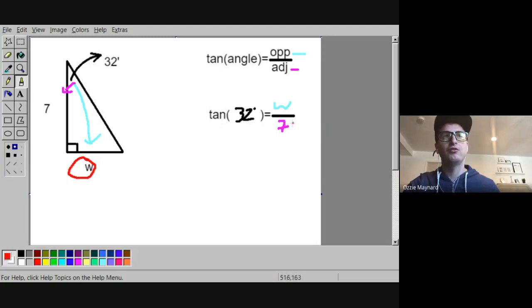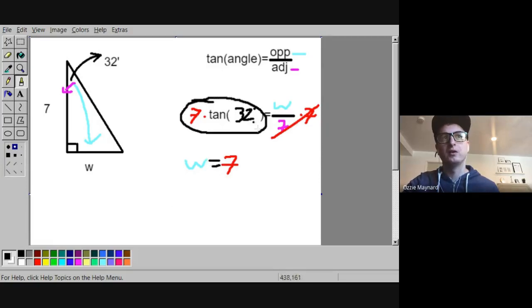What we need to do is get w to be alone. In this case, w is being divided by 7, so I got to multiply both sides by 7. That will give me my answer. W is equal to 7 times the tangent of 32 degrees. Usually put that in parentheses. That's going to be our answer.